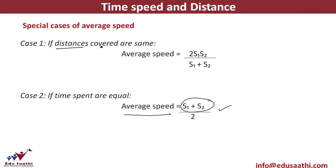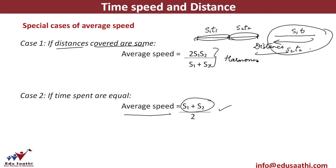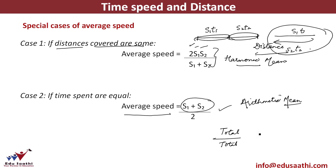When the distances covered are equal — for example, going to a destination and returning — the average speed is given by the harmonic mean of the two speeds: 2S1·S2 / (S1 + S2). If you don't remember this formula, just use total distance divided by total time to find average speed. All special formulas are derived from the general formula. When time is constant, use arithmetic mean; when distance is constant, use harmonic mean.